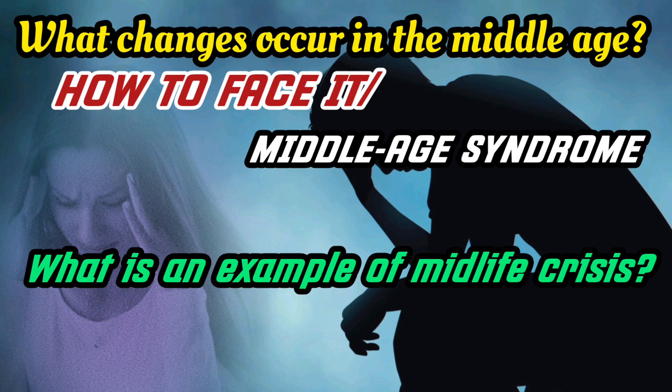We will also discuss the remedial measures we need to take, because when you have a problem you need to understand the solution so that you can be ready to practice it. Modern social scientists generally agree that mid-life begins around 35 to 40 and ends around 55 to 60 or 65. This is the general theory accepted by psychological associations all over the world.